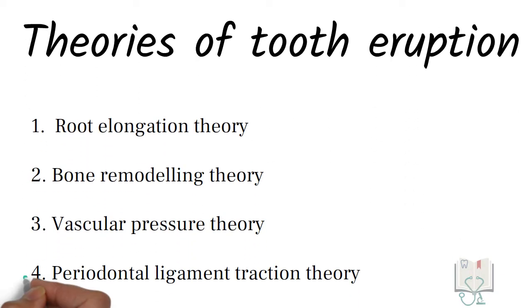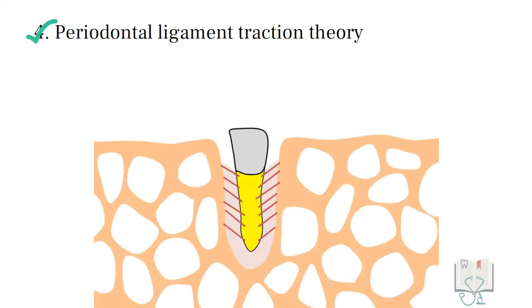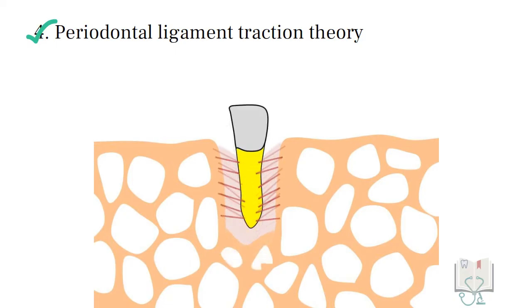In the theories of tooth eruption, according to the periodontal ligament traction theory, it is the contraction of these principal fibers that pulls the tooth out of the alveolar bone to its functional position.